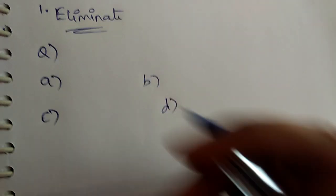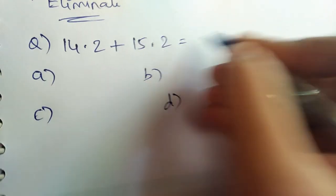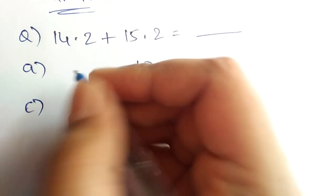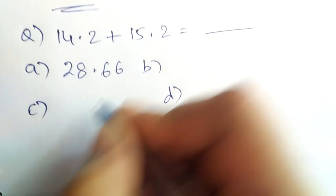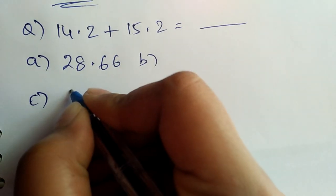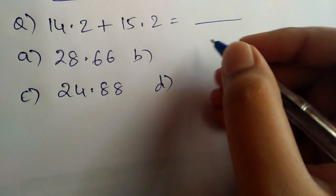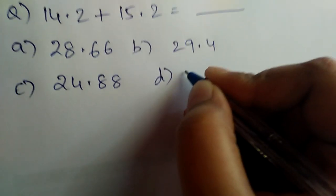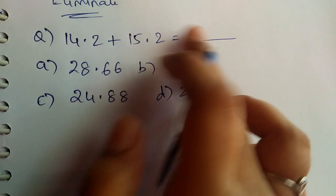For example, let the question be 14.2 plus 15.2 equals what? Options are: a) 28.66, b) 24.88, c) 29.4, and d) 26.4. So this is the question and these are the four options.